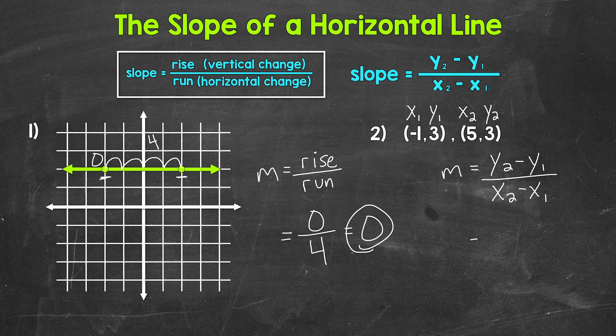Now we plug in. So y2 is 3 minus y1 is 3 over, and now we need x2, 5 minus x1, negative 1. And I'm putting negative 1 in parentheses there, just so it's clear we are working with a negative, and it doesn't get lost next to that subtraction sign.